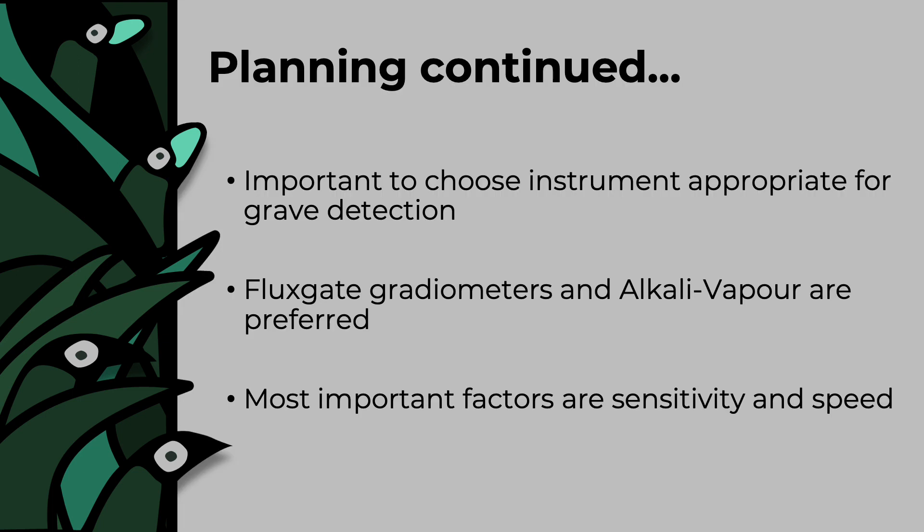There are a variety of magnetometers available on the market, most of which are aimed at the environmental or engineering sectors rather than archaeology. It is important, therefore, to choose an instrument that is suitable for grave detection. Flux gate gradiometers and alkali vapor magnetometers are often preferred for archaeology as they allow for rapid, high-density data acquisition, and many of the commercially available instruments allow for a setup with multiple sensors. Other instruments are also suitable but may be slower or more difficult to handle. Much will depend on what is locally available. The most important factors to consider are sensitivity and speed of the instrument. Instruments that are capable of rapid, high-density data acquisition are essential for grave detection.